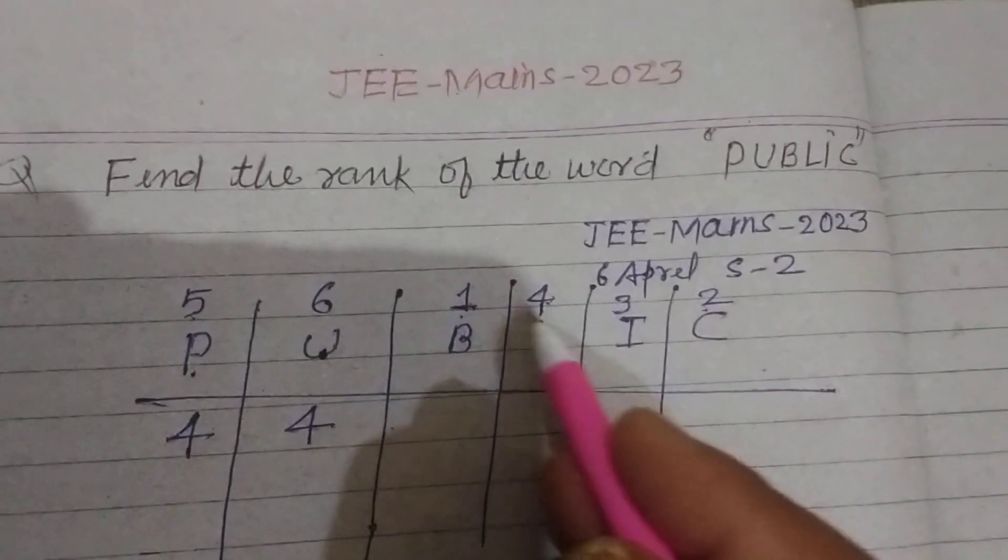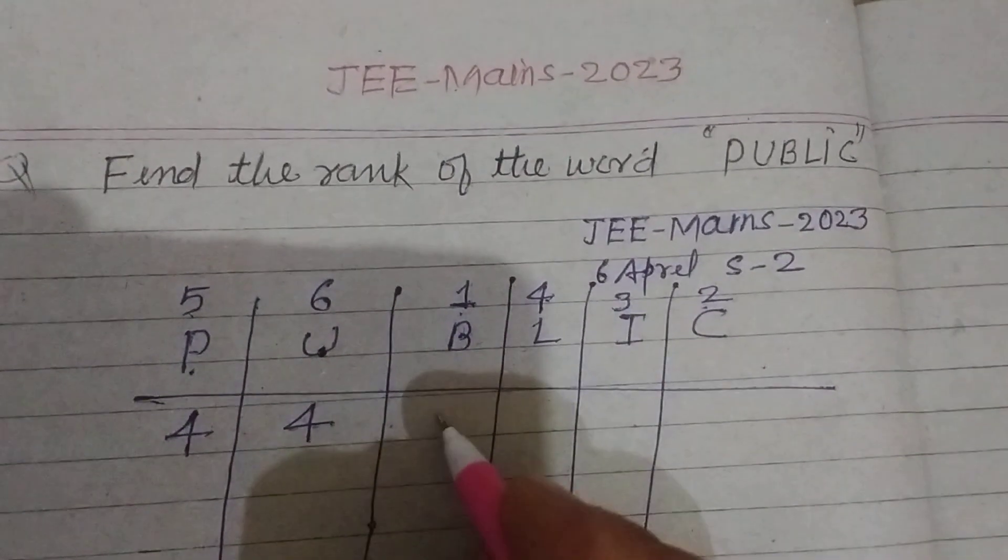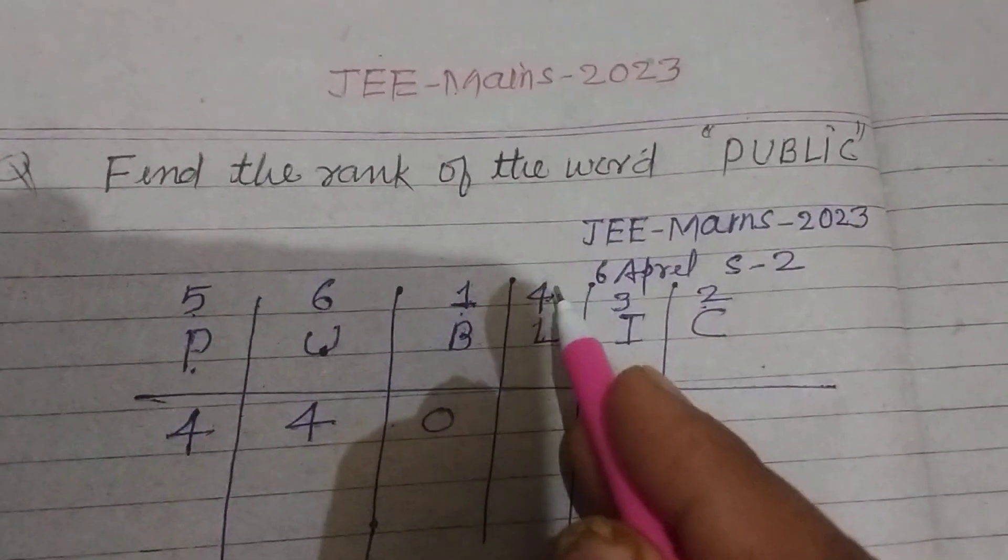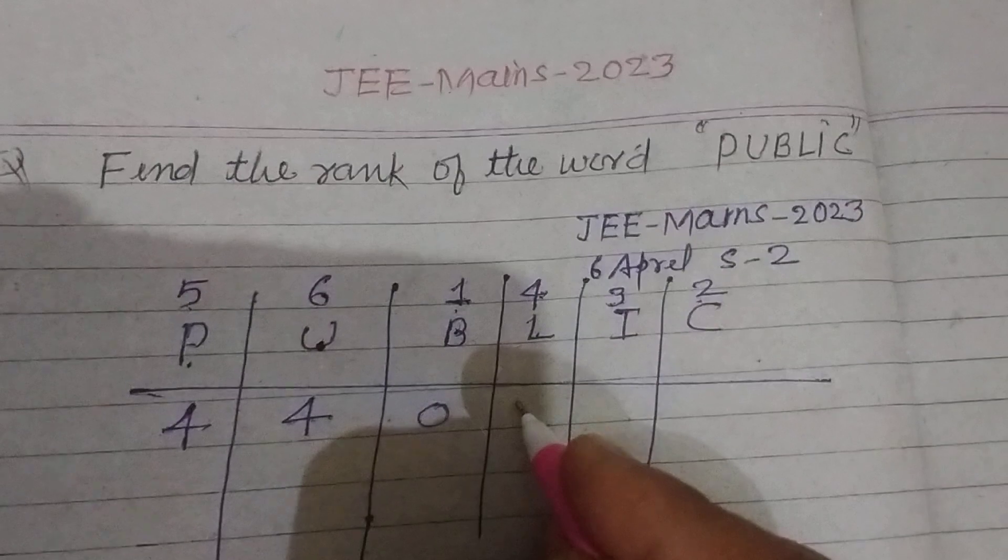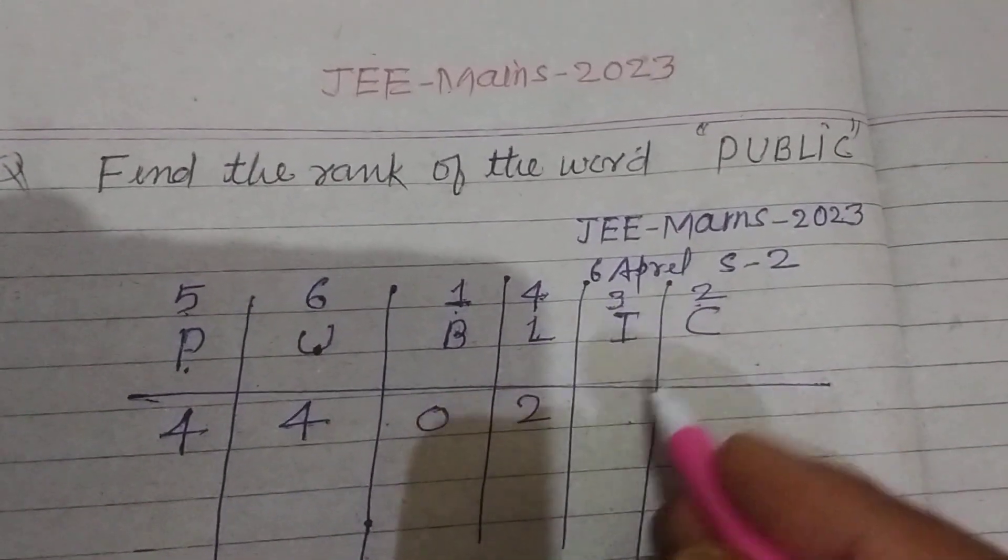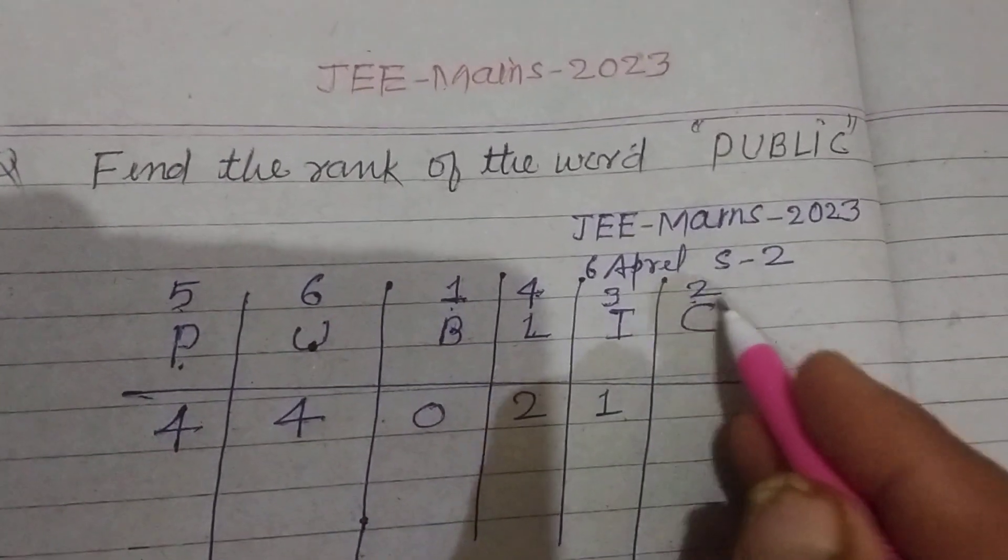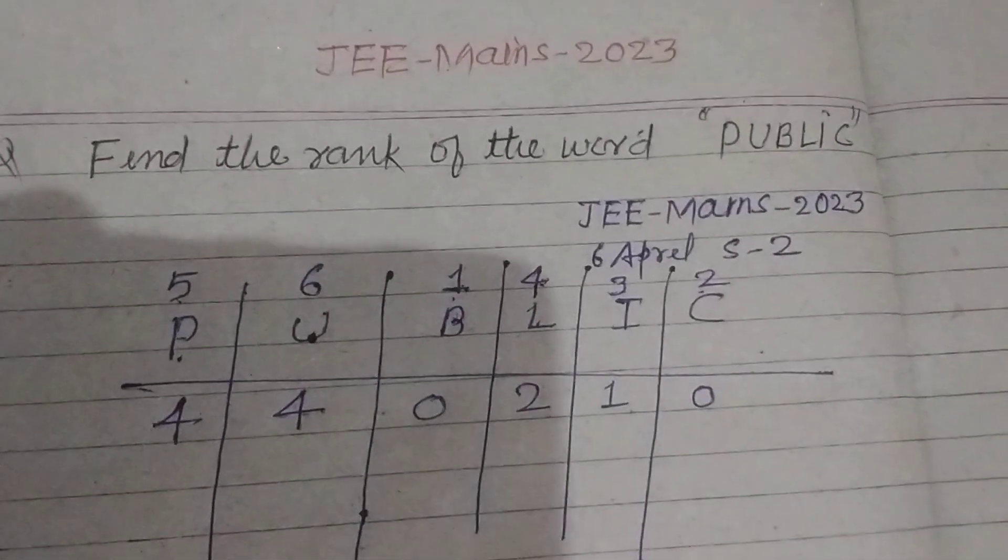And B, one. No less number in right side, so zero. L, four. Three, two. Two numbers. I, three. This is one. And C, two. Zero, no number.